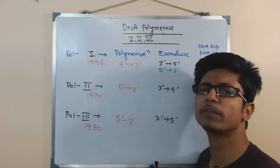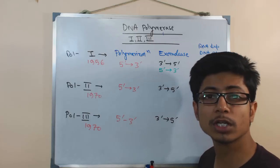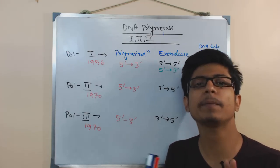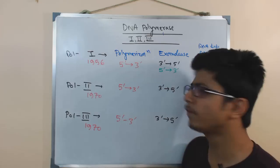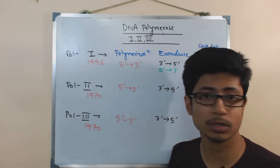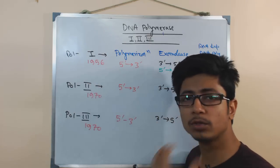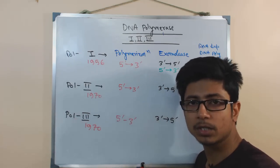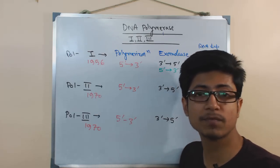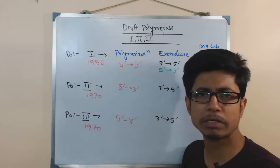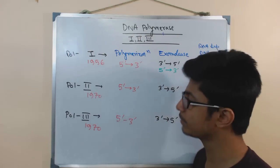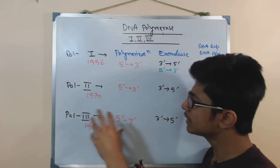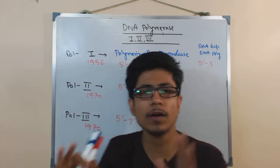Polymerase 2 was discovered earlier than polymerase 3, but its functions are not well known even now. Polymerase 2 is found to act as a backup enzyme during the DNA replication process. There are also polymerase 4 and polymerase 5 found in E. coli and other bacteria — these are all accessory enzymes which help the ultimate replication enzyme, polymerase 3.